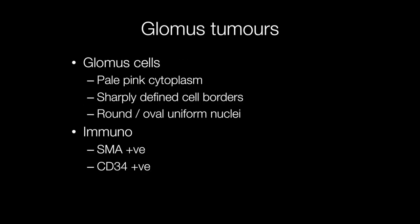Histologically, the glomus cells have pale pink cytoplasm, sharply defined cell borders, and round or oval uniform nuclei. Glomus tumour cells show positive staining for smooth muscle actin (SMA) and CD34.